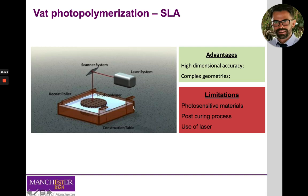Stereolithography systems provide higher dimensional accuracy compared to many other systems like fused deposition modeling, binder jetting, or powder bed fusion. Combined with support structures, this enables building very complex and accurate geometries. Limitations are mainly a limited range of materials — they must be photopolymers capable of transitioning from liquid to solid via light — and the post-curing stages required to obtain a final part.